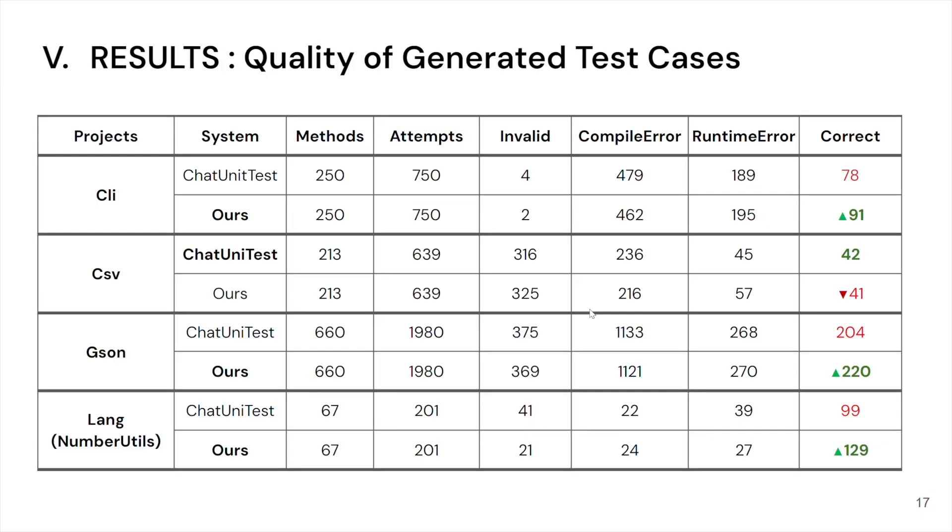So now let's take a look at the experiment results. To evaluate our EvoUnitTest, we conducted the experiments on 4 projects from the Defect4J dataset, which are CLI, CSV, Gson, and Lang. For Lang specifically, we only use the methods from the class NumberUtils.